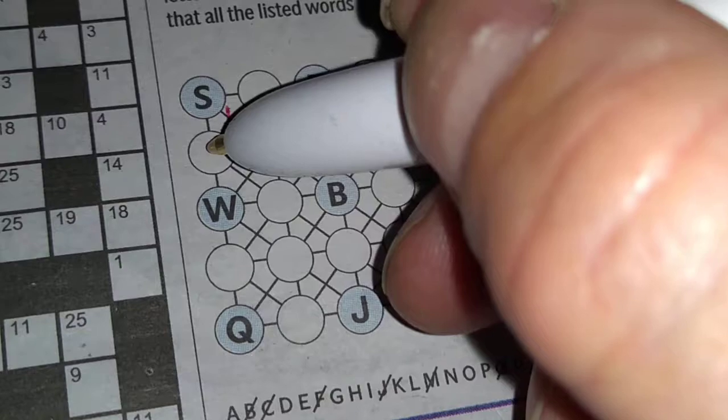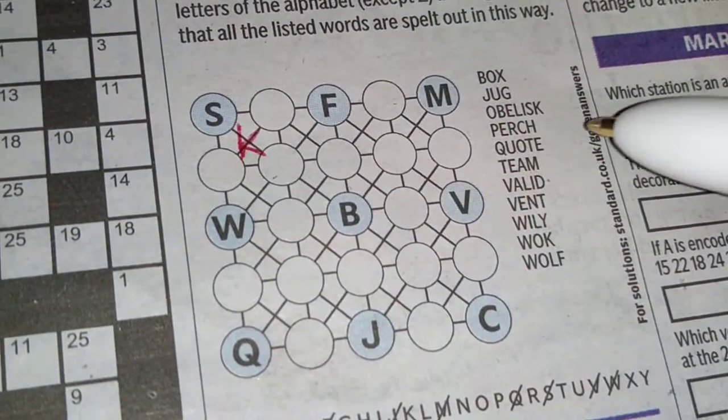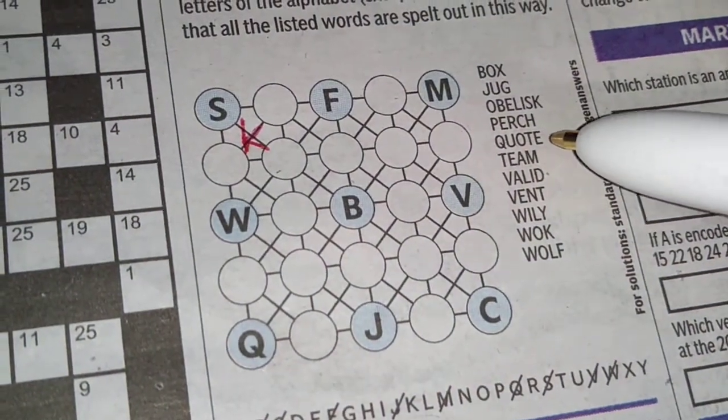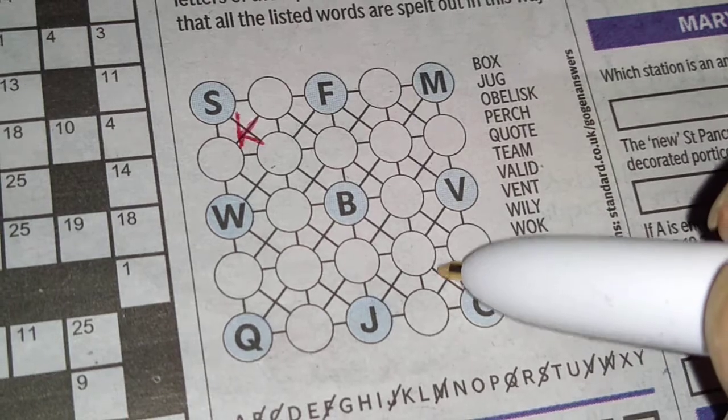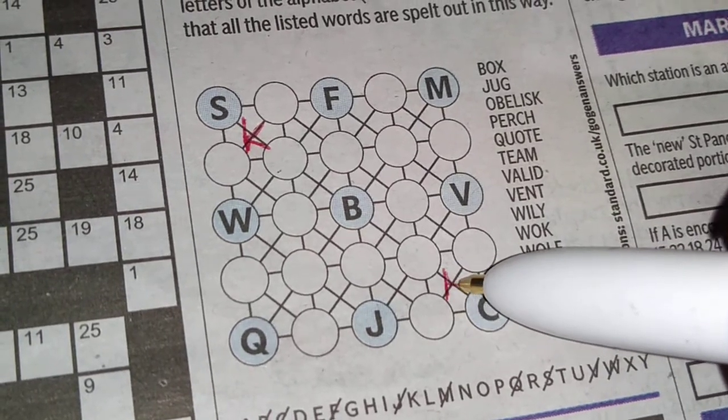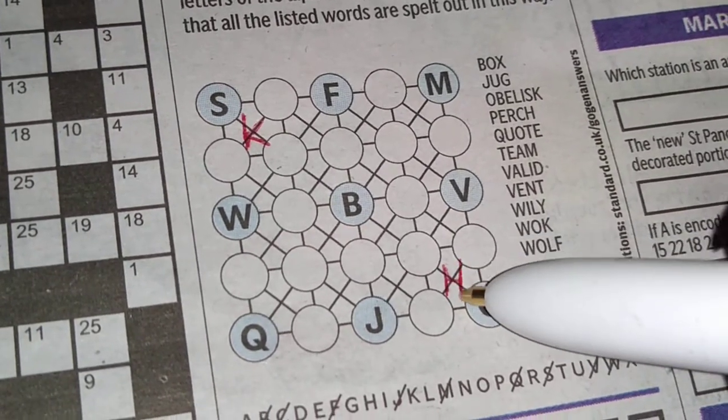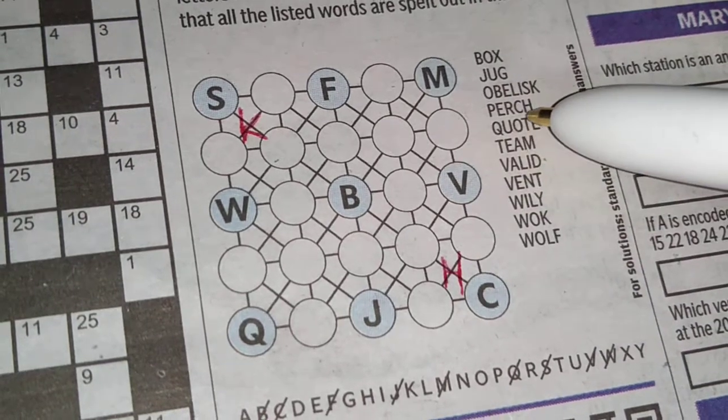One of these three. Obelisk. Perch. And again, this H is going to be next to the C, so it has to be here. One of these three. That's all we can say about it at the moment.